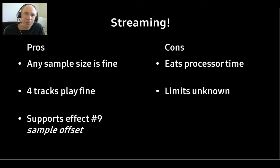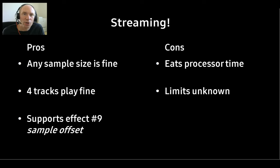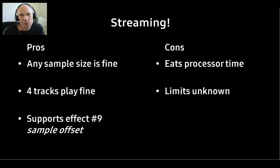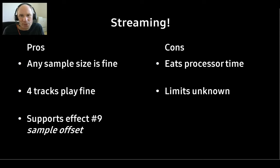Streaming is amazing but not without issues. On the pro side, streaming does not have to deal with the sound RAM limitations, and it's what makes the GS able to play almost any 4-track module out there. Module effect number 9, the sample offset, is only available to streamed instruments — it allows the composer to play from anywhere within an instrument, which we can't do with sound RAM-based instruments. On the con side, streaming eats processor time massively — you won't be using this in a game with a lot of sprites moving on screen. Also, there's no definitive answer on how many tracks can be streamed in parallel.